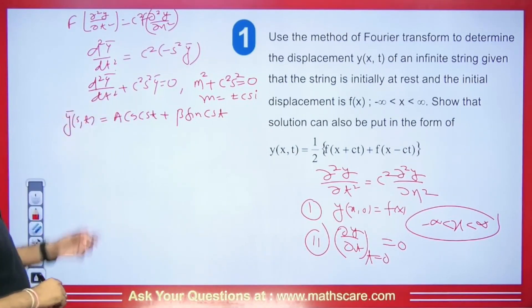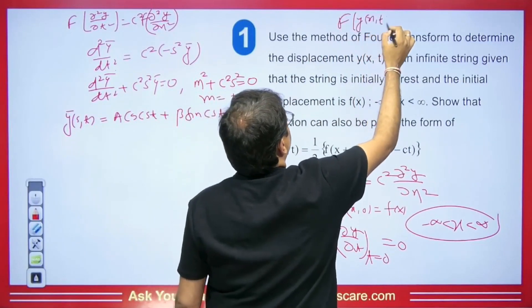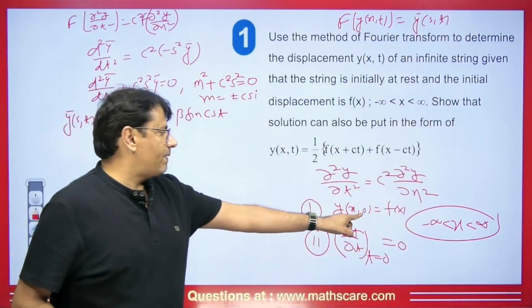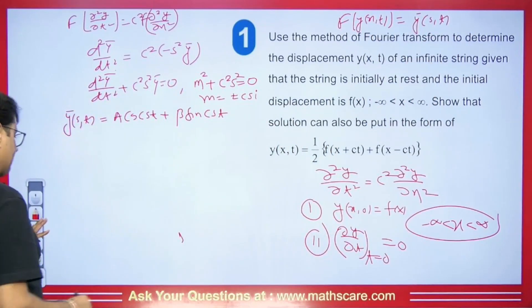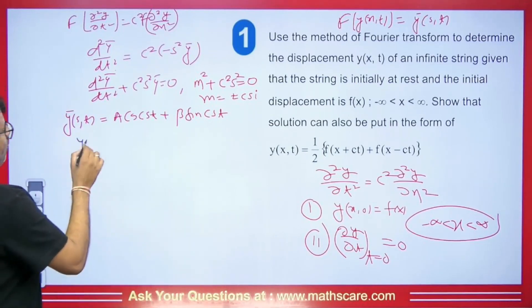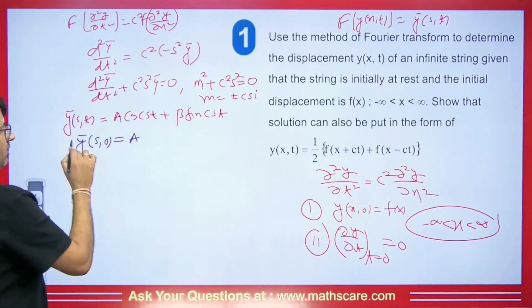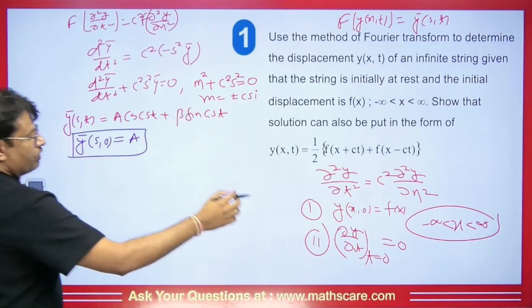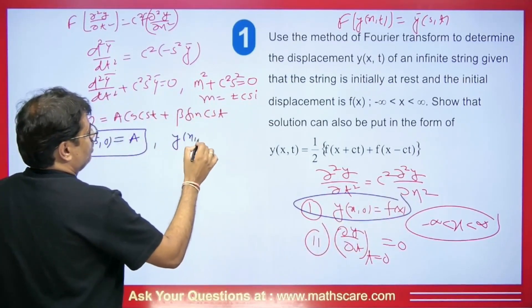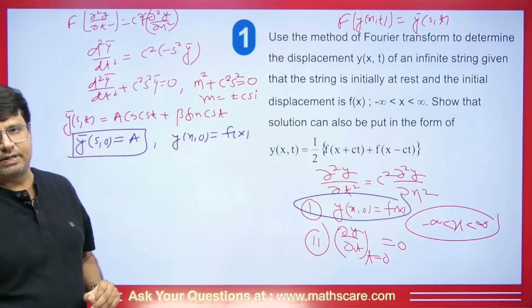We apply the first condition. Setting t = 0: ȳ(s,0) = A·cos(0) + B·sin(0) = A. The Fourier transform formula gives: ȳ(s,t) = (1/√(2π)) ∫_{−∞}^{∞} e^{isx} y(x,t) dx. Putting t = 0: ȳ(s,0) = (1/√(2π)) ∫_{−∞}^{∞} e^{isx} y(x,0) dx. Since y(x,0) = f(x), we get ȳ(s,0) = (1/√(2π)) ∫_{−∞}^{∞} e^{isx} f(x) dx.